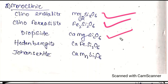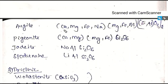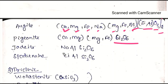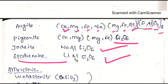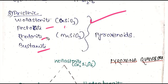For clinopyroxenes: diopside formula is CaMgSi2O6. Hedenbergite formula is CaFeSi2O6. Johannsenite formula is CaMnSi2O6. The general formula for clinopyroxenes uses Ca, Mg, Fe, Na, Al with SiO3 or Si2O6.